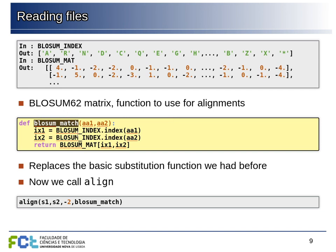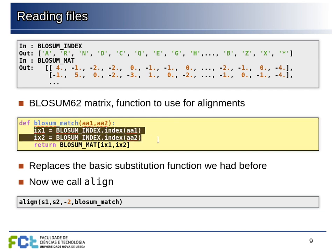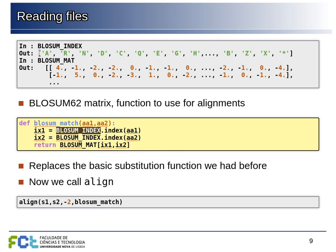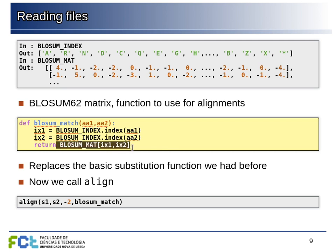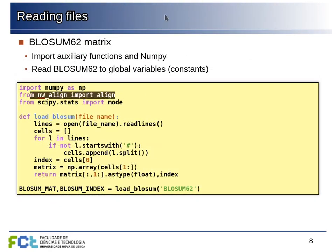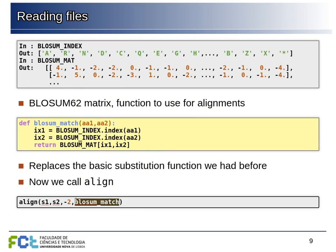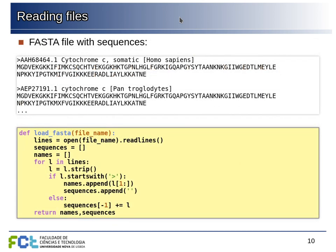We then create a match function for residues using the BLOSUM62 matrix: given two amino acid residue codes, it finds the index of each in the residue list and looks up the matrix at those coordinates to get the substitution value. When we call the align function, we still use minus two for the gap penalty, but we pass this new function for the match score instead of the original simplified version.